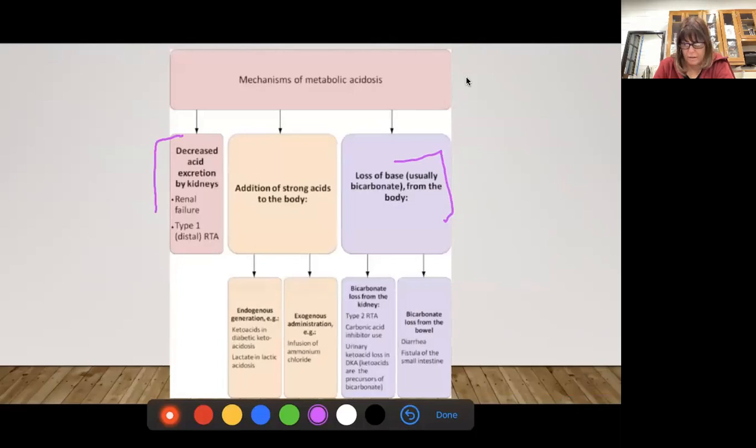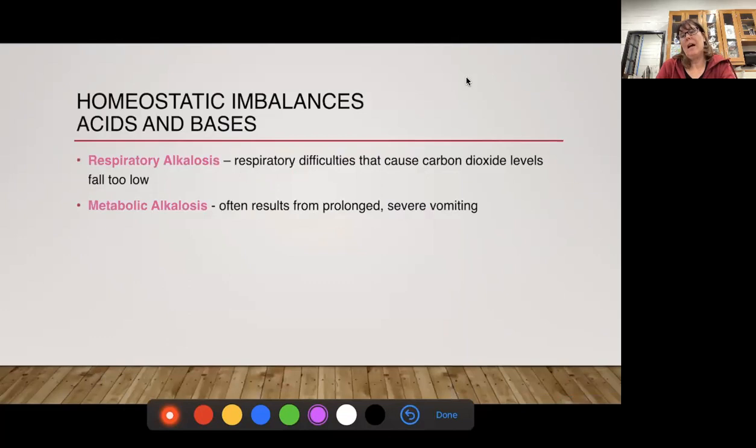Again, maybe you're losing bicarbonate ions for some reason, and usually again that's from the kidneys or the bowels. So excess diarrhea. So we have problems with both the excretion and elimination. And then we also have keto acids, diabetic ketoacidosis. So we talk about different types of strong acids to the addition when you're adding strong acids to the body. A lot of people worry about particular diets, especially if you're eating a diet that's full of fats. That fatty acid, and they talk about going into ketosis in order to burn those fats, which is what we're trying to do when we're losing weight.